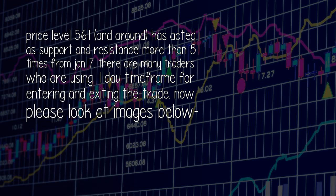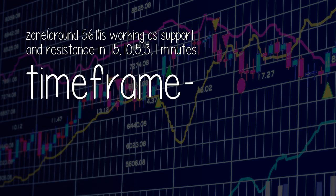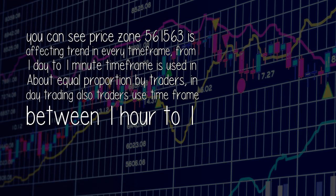Now please look at images below. In the above image you can see the same price zone acted as support and resistance in the 30-minute time frame, meaning many traders are using the 30-minute time frame for entering and exiting trades. You will find that the same price zone around 561 is working as support and resistance in 15, 10, 5, 3, and 1-minute time frames.